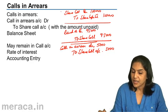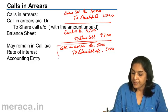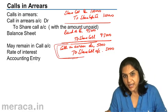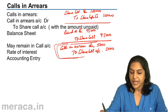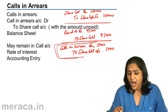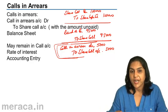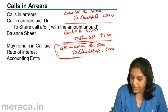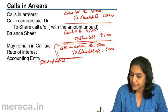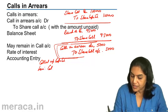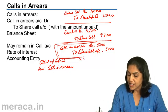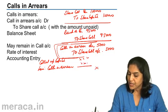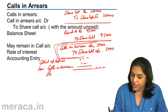Calls in arrears account may or may not be created. If it is not created, the debit balance in the share allotment or any call account represents calls in arrears. In the balance sheet, under share capital, we show called-up capital less calls in arrears. Calls in arrears is a debit balance shown as a deduction from the liability. Called-up capital minus calls in arrears gives us the paid-up capital.